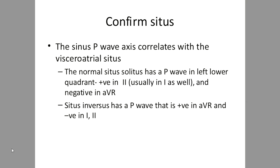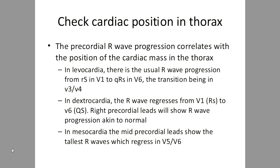Once situs solitus is confirmed, proceed to subsequent steps. Confirm that the cardiac mass is on the left side of the thorax — levocardia. The precordial R-wave progression correlates with the position of cardiac mass: in levocardia, there is usual R-wave progression from small R and big S in V1 to a small Q and big R in V6, with transition at V3 or V4. In dextrocardia, R-wave regresses from V1. Switching lead positions to the right side restores normal progression. In mesocardia, the mid-precordial leads (V3 or V4) show the largest R or S voltages, with smaller complexes going either left or right.